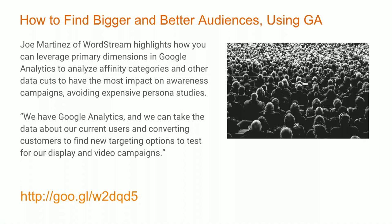We have Word on the Street, which highlights people out there talking about Google Analytics and offering best practices. This caught my eye from Joe Martinez of WordStream, who has a whole stream of content talking about how you can take primary dimensions in Google Analytics, look at affinity categories and other data from your corpus of data, and run an awareness campaign knowing exactly what's having an impact. This avoids spending money interviewing people about user personas when you actually have the data already. If you have the data, use it.